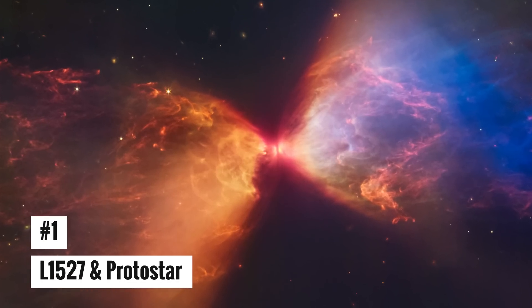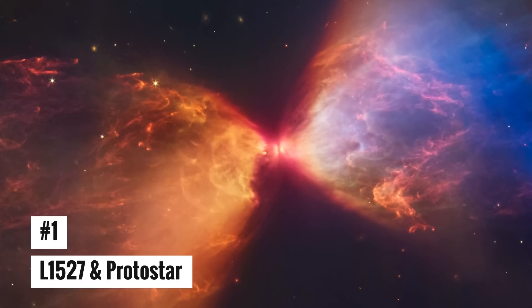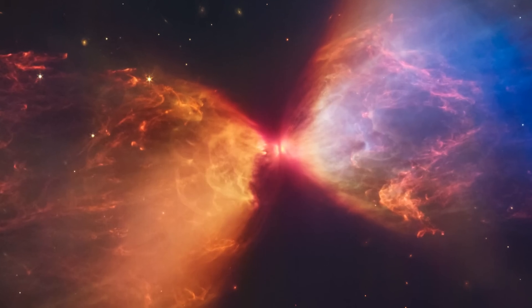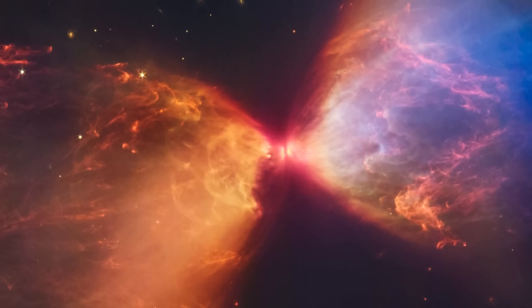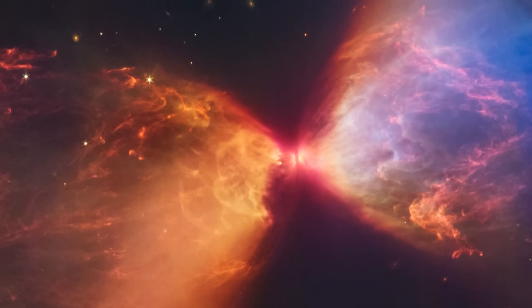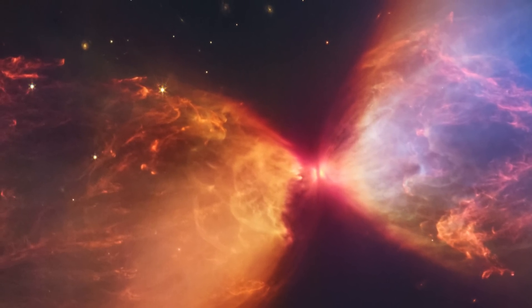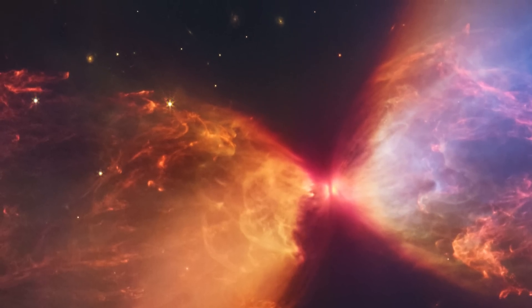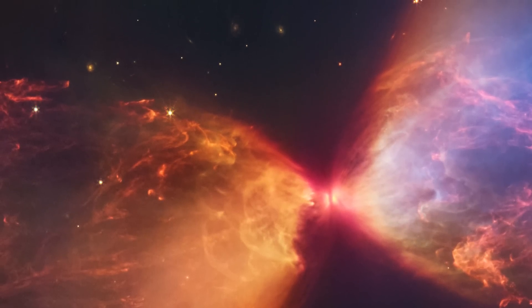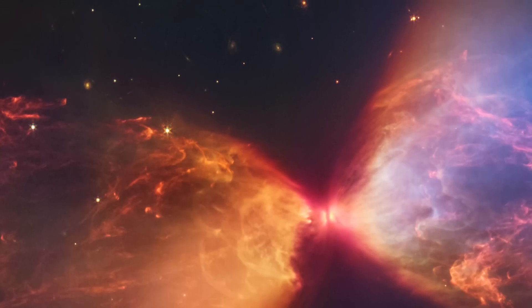Number 1: L-1527 and Protostar. This image from NASA's James Webb Space Telescope near-infrared camera, NIRCam, shows a protostar encased in a cloud of material that is fueling its expansion. The protostar is located within the black cloud L-1527. There are cavities above and below the star that were emptied out by the star's ejections, and their edges glow orange and blue in this infrared image.